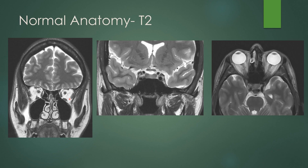If you go posteriorly, you have the cavernous sinuses, which you can tell because you can see the cavernous ICA flow void. You have the optic chiasm. Below that, the pituitary gland. And inferior to the cavernous sinus, you have Meckel's caves.